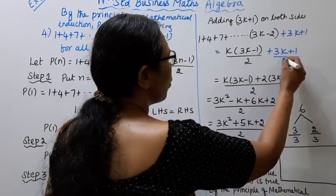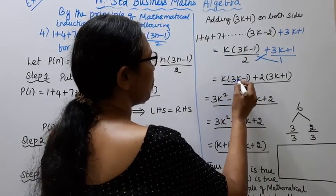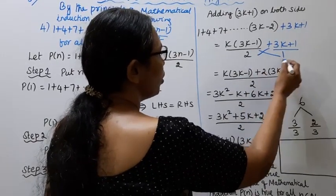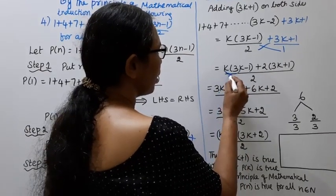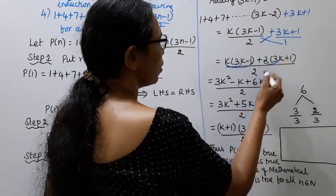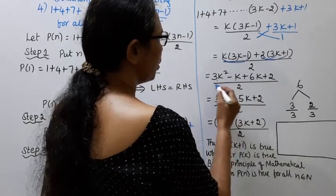On the left hand side, add 3K plus 1. On the right hand side, K into 3K minus 1 by 2 plus 3K plus 1. Cross multiply: K bracket 3K minus 1 plus 2 bracket 3K plus 1, divided by 2. Now multiply: K into 3K equals 3K square minus K, plus 6K plus 2, by 2.